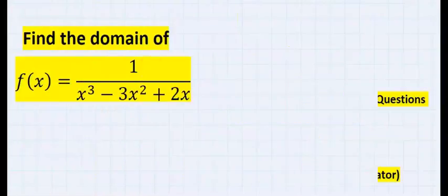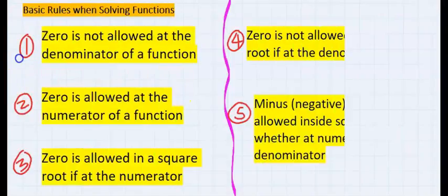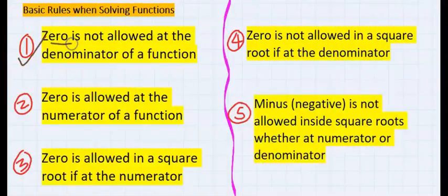To solve this problem, let's consider some basic rules. In one of the rules, 0 is not allowed at the denominator of a function, but 0 is allowed at the numerator.